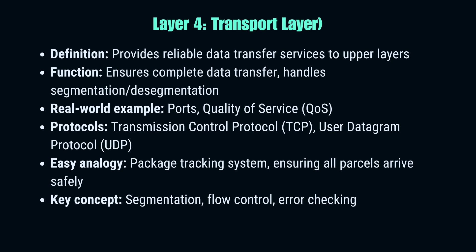The transport layer acts as our network's delivery service. It ensures complete data transfer and handles the nitty-gritty of breaking data into segments and putting it back together. This layer introduces the concept of ports, allowing multiple applications on a device to communicate simultaneously. The two main protocols here are TCP (Transmission Control Protocol) and UDP (User Datagram Protocol). TCP is like sending a package with a signature required — reliable but a bit slower. UDP is more like regular mail — faster, but with fewer guarantees. This layer also manages flow control and error checking.